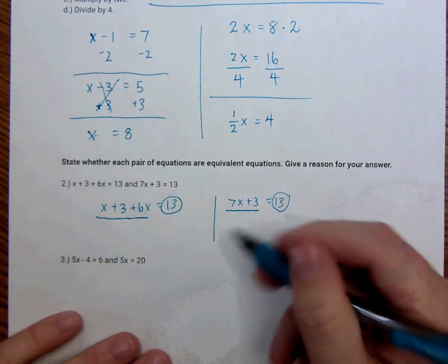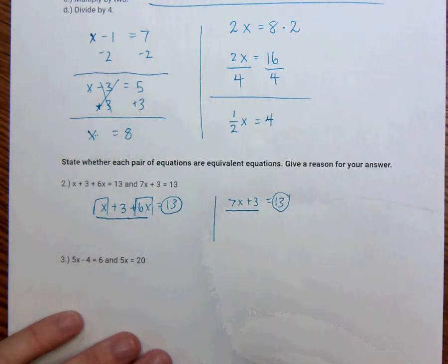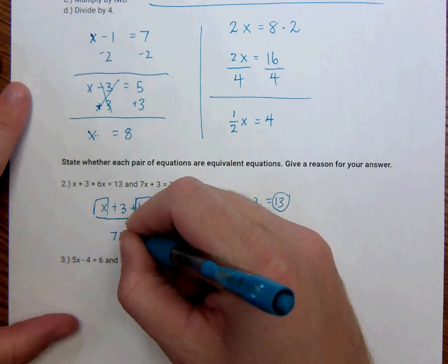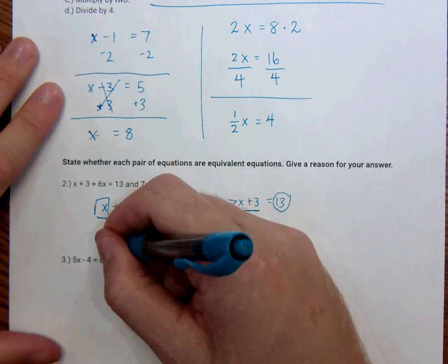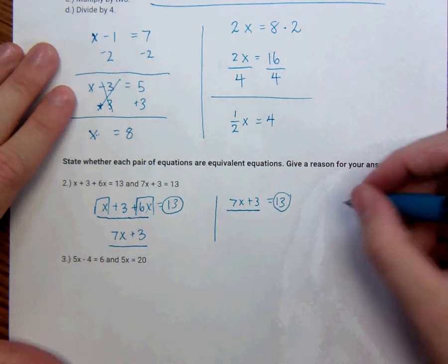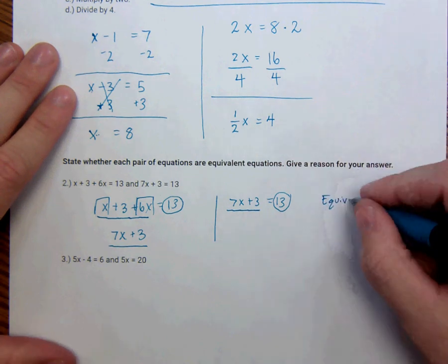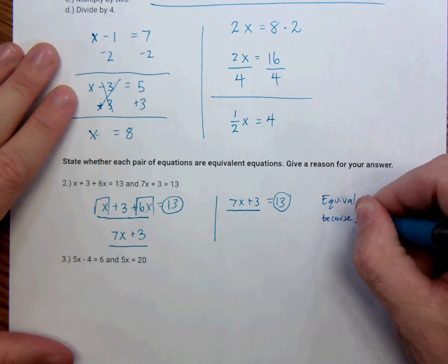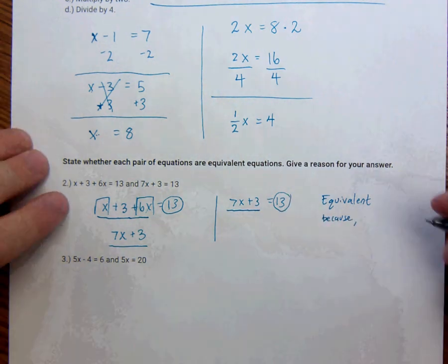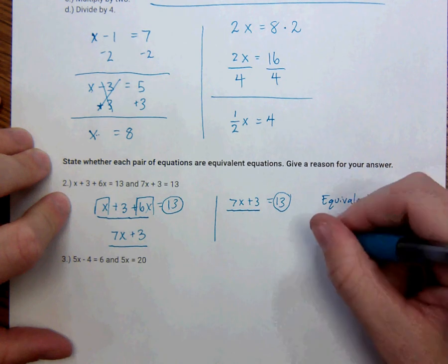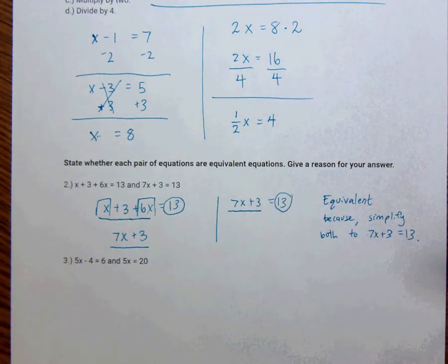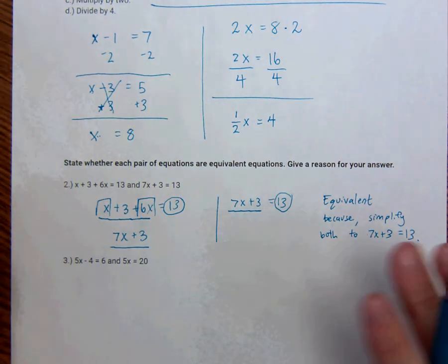What if I were to combine terms here? So basically if I were to take x and 6x and combine them. I'm not doing things to both sides of the equation, but I can simplify one side of the equation. That's allowed. So x plus 6x, that's going to be 7x plus 3. The 3 stays there. So 7x plus 3, 7x plus 3. They are the same. So if you're going to answer this, you would say, yes, they are equivalent. They are equivalent because you can simplify both to 7x plus 3 equals 13. And thus, you're going to get the same solution, because 7x plus 3 equals 13 is going to be the same thing no matter what.